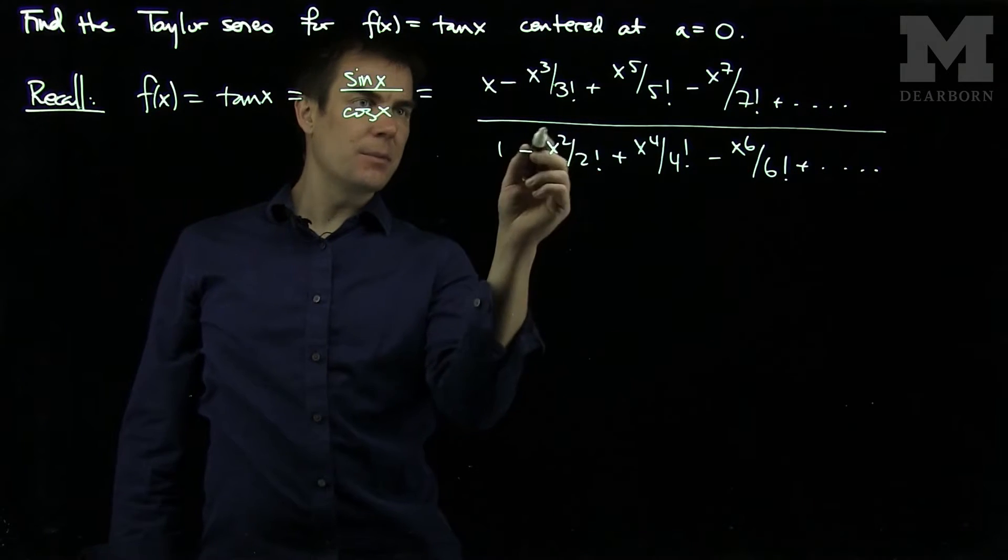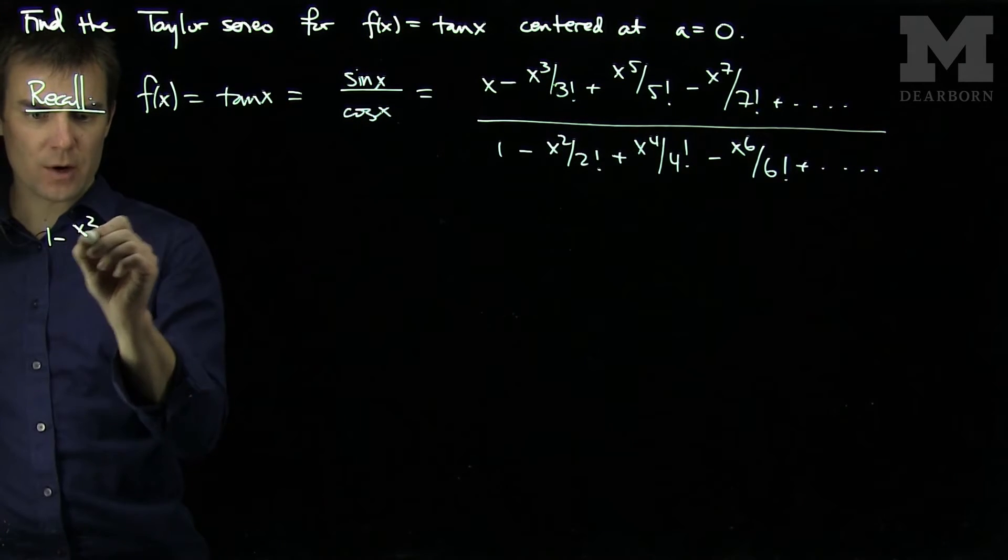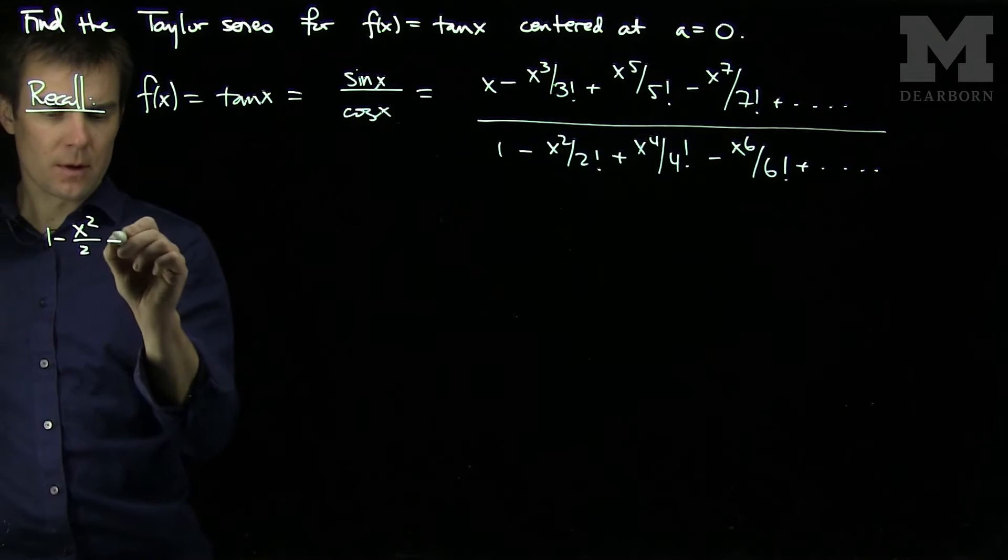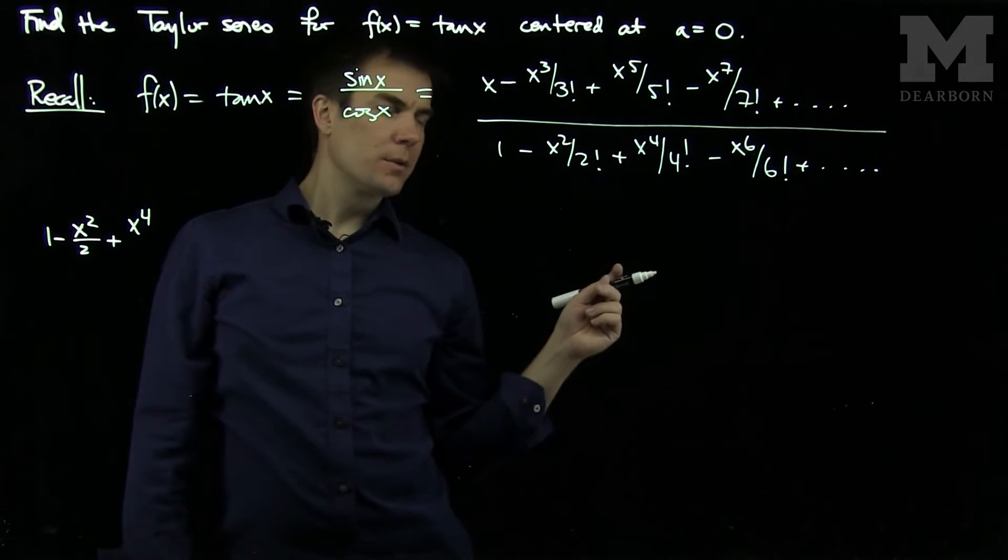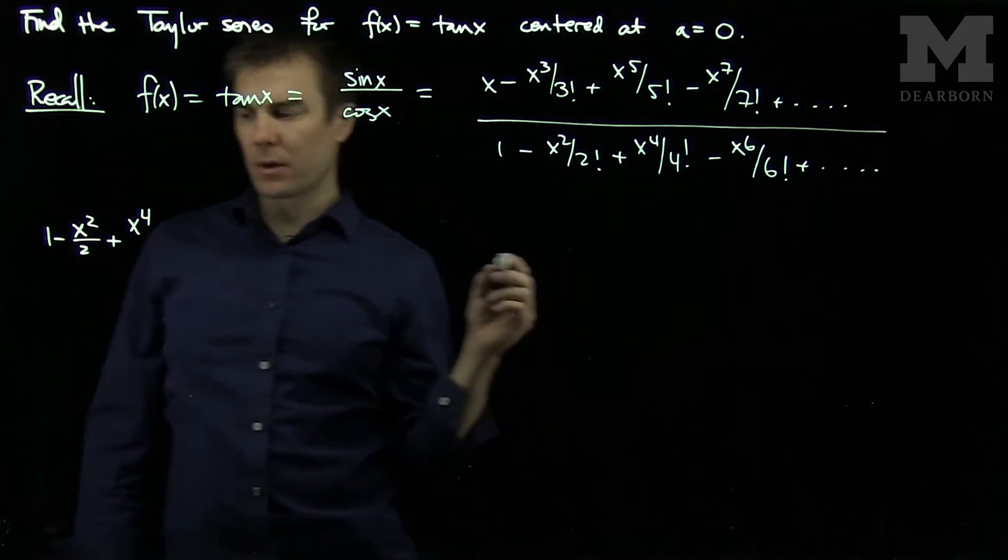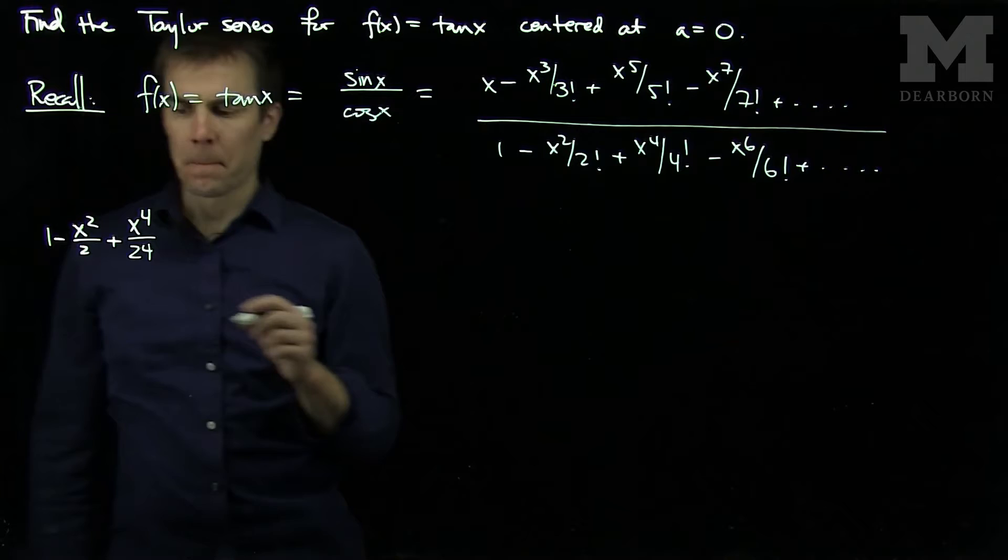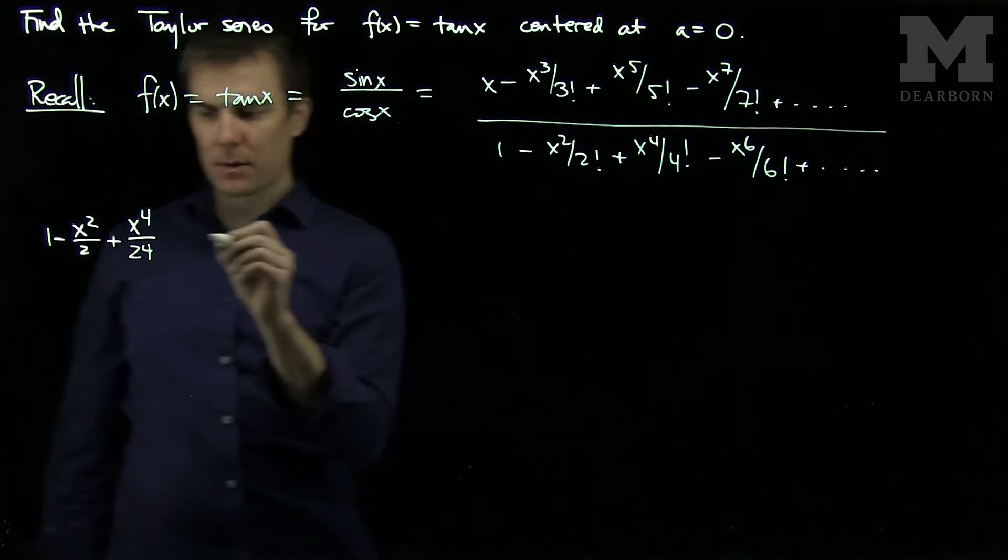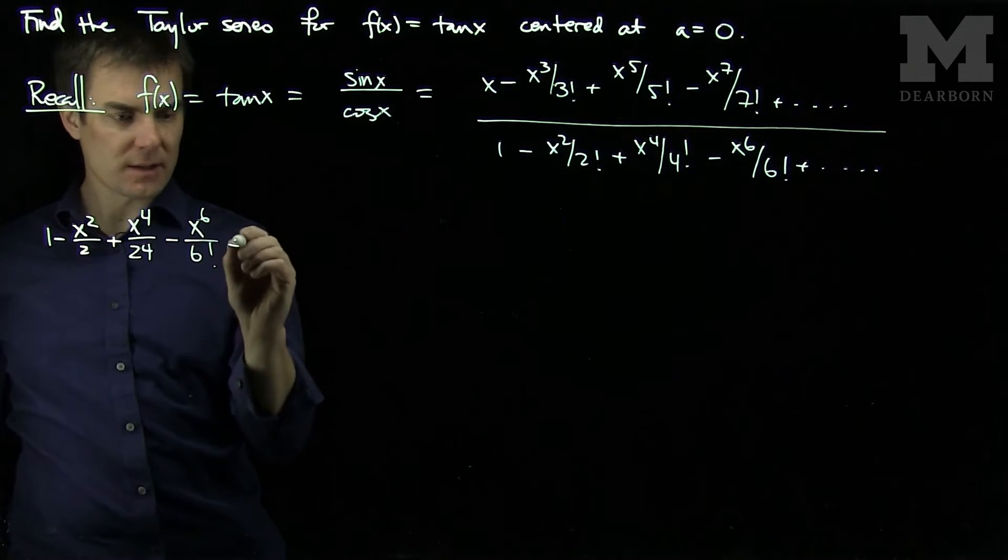So this is my denominator and this is my numerator. So this 1 minus x squared over 2 plus x to the fourth. Then we have 4 factorial, which is going to be 24. And then we have minus x to the sixth over 6 factorial.